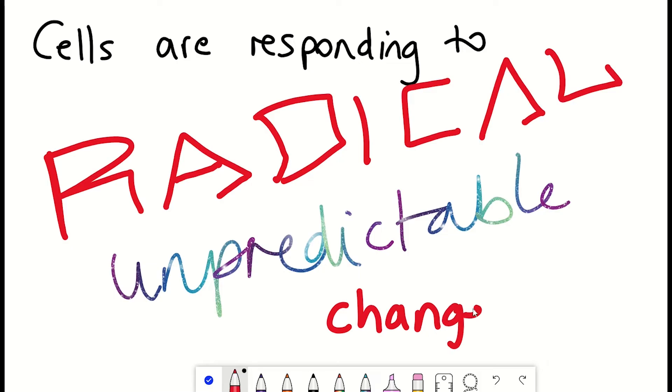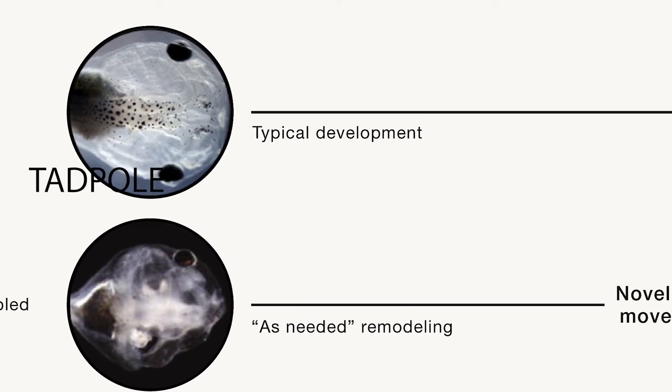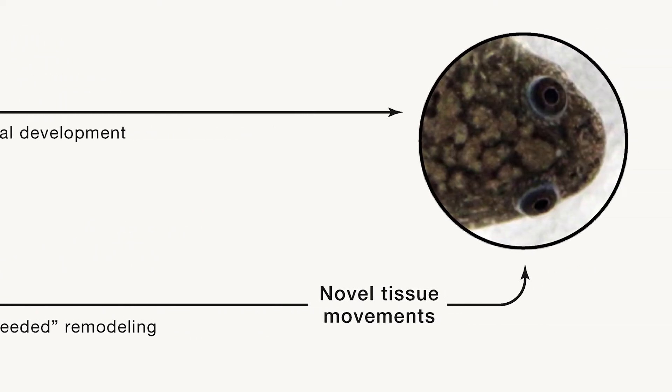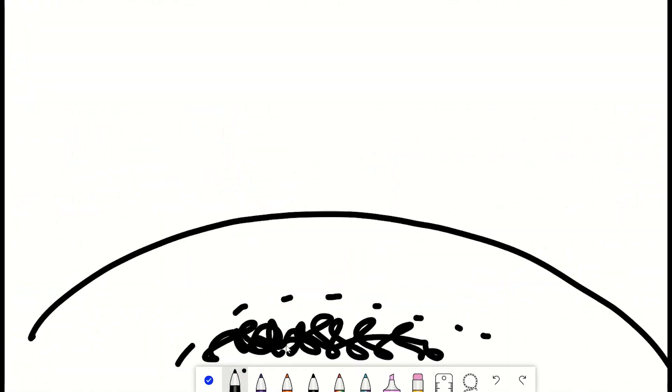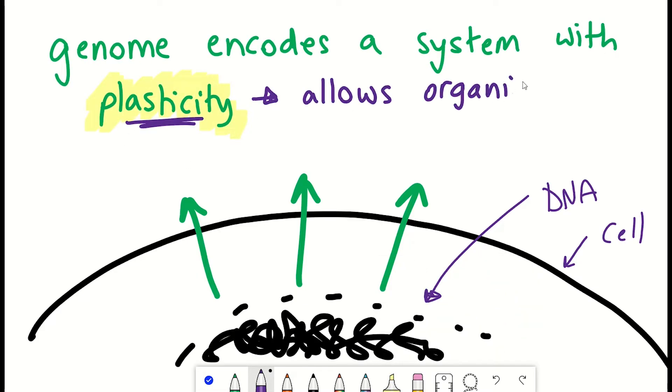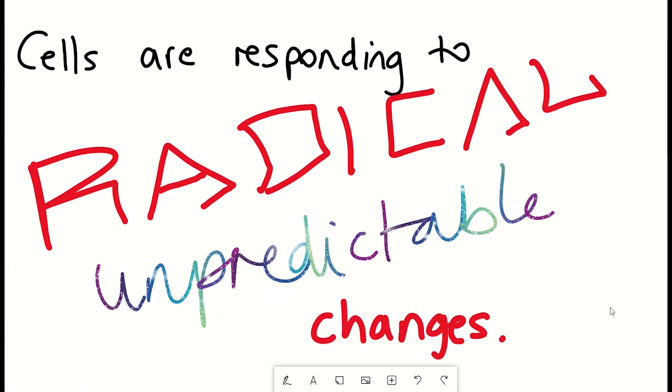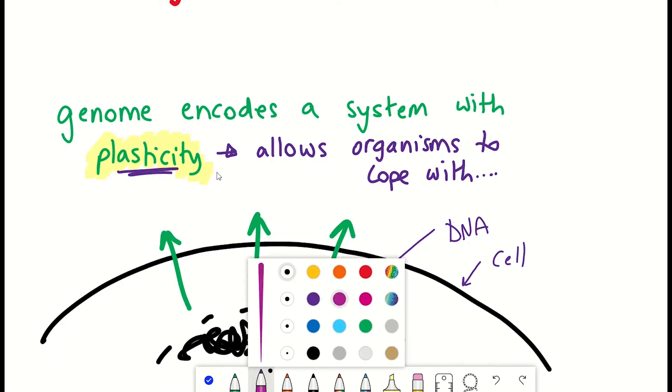So in the case of the tadpole frog example with the face rearranging, there's clearly no genetically hardwired information for these rearrangements. Instead, the genome seems to be encoding some kind of cellular system that has plasticity. And this plasticity helps the organism cope with achieving the final morphology of the frog, despite these radical, unpredictable changes. So there is evidently some information above the genetic information.